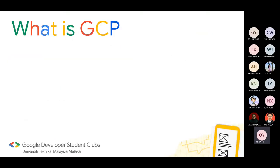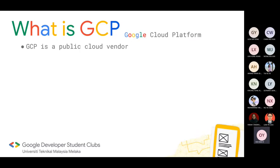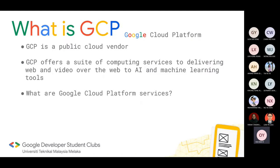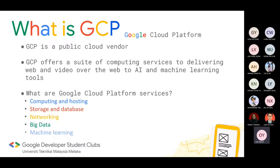So what is GCP? GCP stands for Google Cloud Platform. It is a public cloud vendor and it also offers a suite of computing services with AI and machine learning tools. Google Cloud Platform gives us five main services: computing and hosting, storage and database, networking, big data, and machine learning.